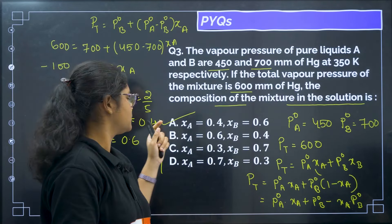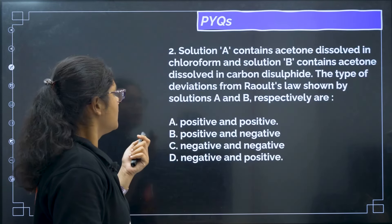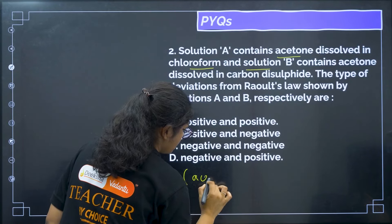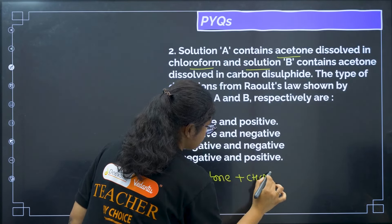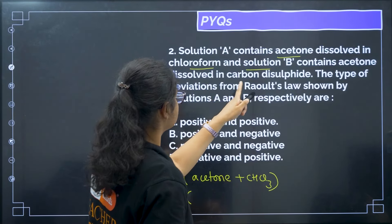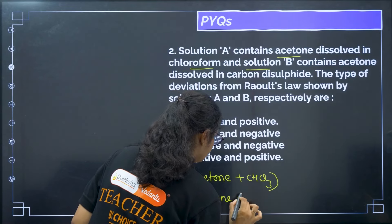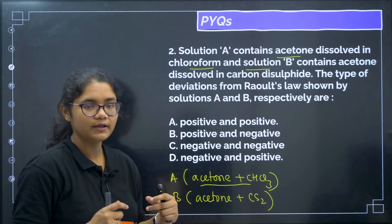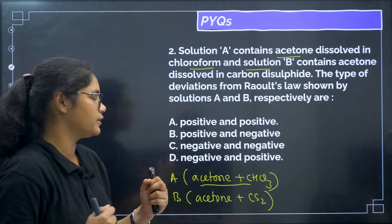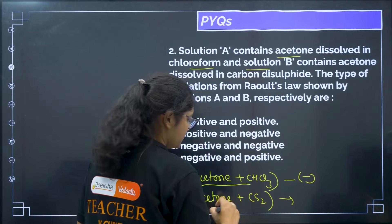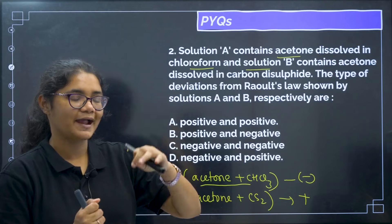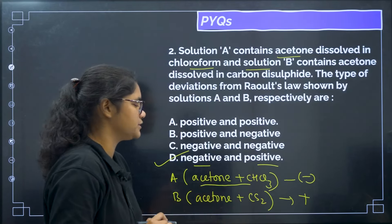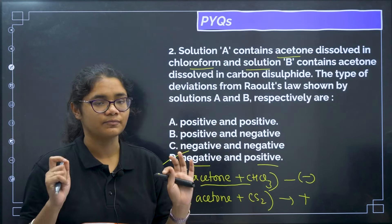This was a previous year question — you can see how easy the numbers are. Question 4: solution A contains acetone dissolved in chloroform, solution B contains acetone dissolved in CS2. Acetone and chloroform have hydrogen bonding so particles come together and attraction is stronger — this shows negative deviation. Acetone and CS2 interactions are disrupted so they go far apart — this shows positive deviation. Correct answer: option D. Examples are very, very important.